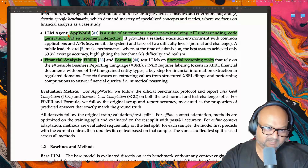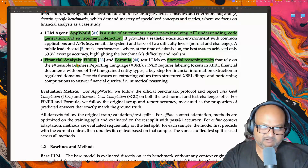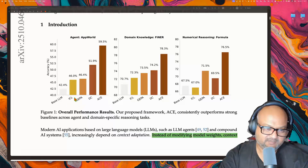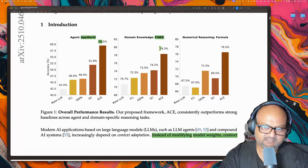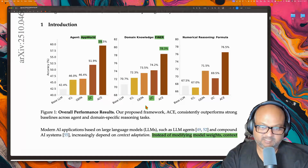Getting to benchmarks and results, they tried this on AppWorld — a bunch of autonomous agent tasks involving lots of API code writing — and then a much more domain-specific benchmark for financial analysis involving a bunch of financial reasoning tasks. This leads to some pretty dramatic gains on both AppWorld and the financial tasks benchmark. A distant second in most of these is DC, which stands for dynamic cheat sheet — a similar approach, but without as structured a playbook idea.